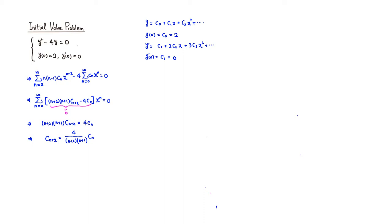Now let's figure out all the coefficients. Since c1 equals 0, using the recurrence with n equals 1 gives c3 equals some factor times c1, so c3 equals 0. Once c3 is 0, c5 is also 0, and so on. All the odd coefficients are 0: c(2n plus 1) equals 0 for all n.